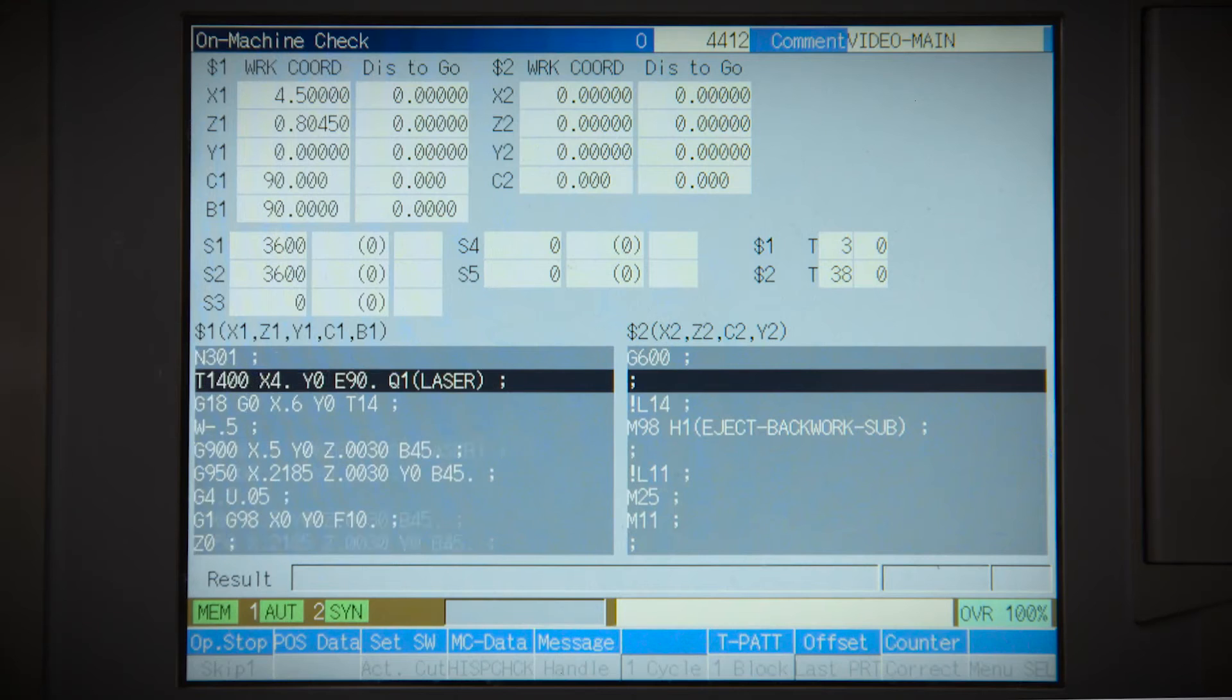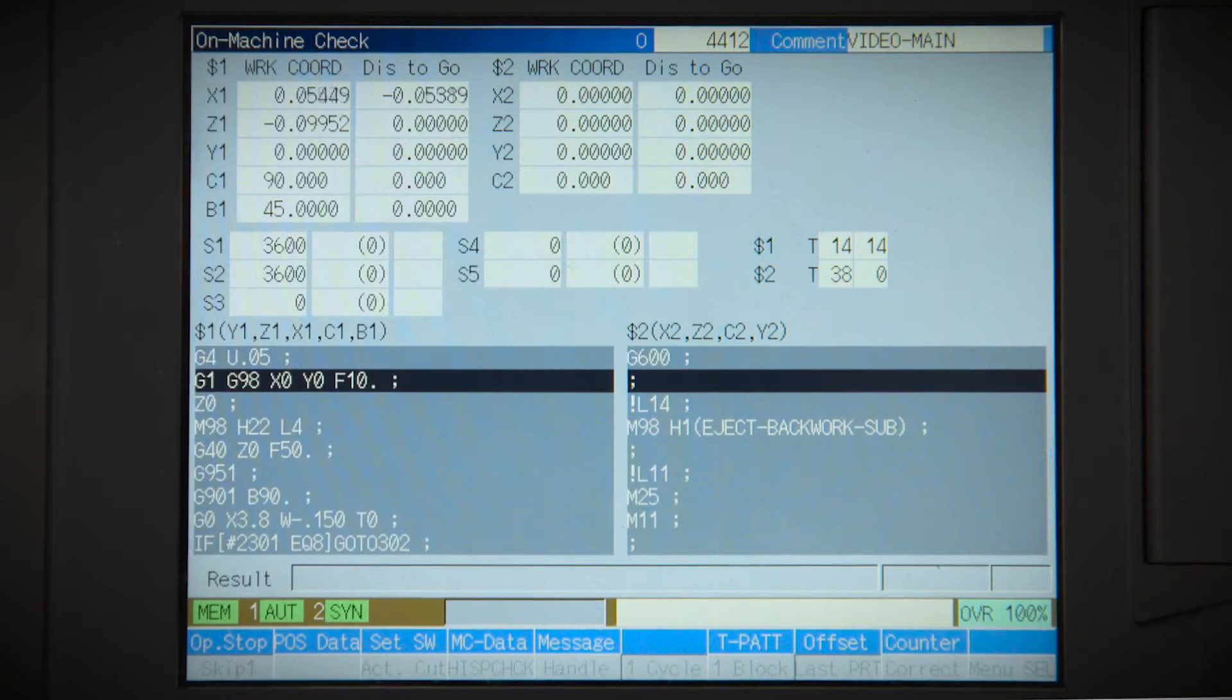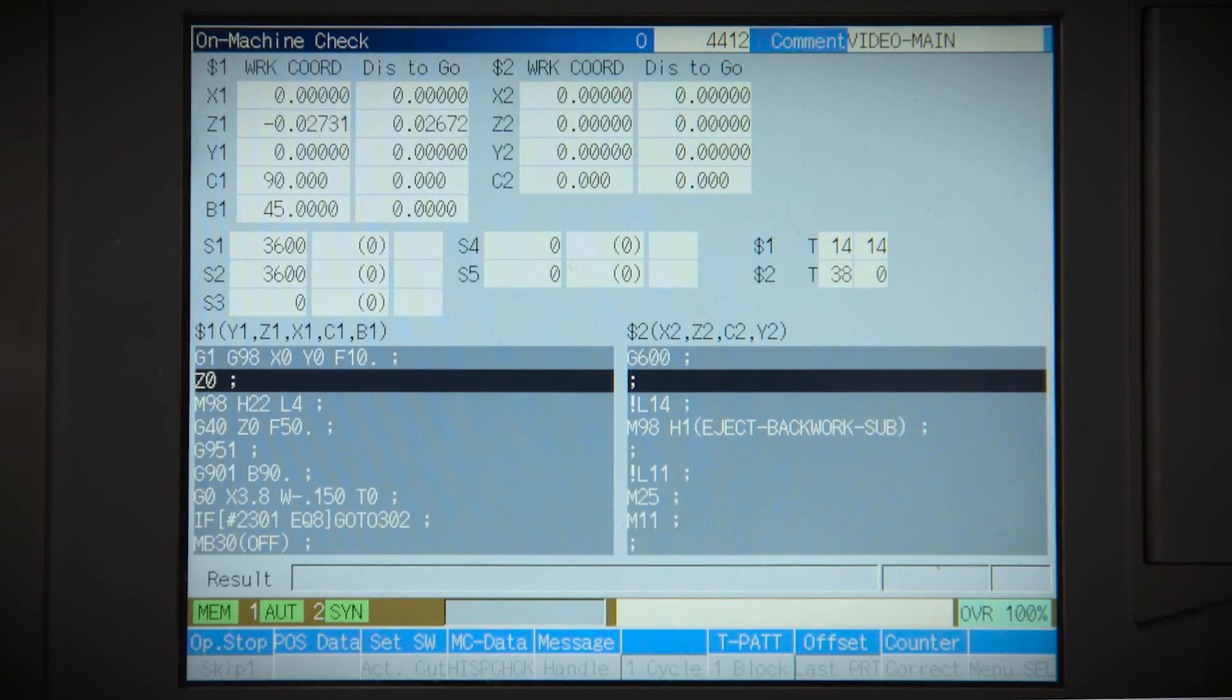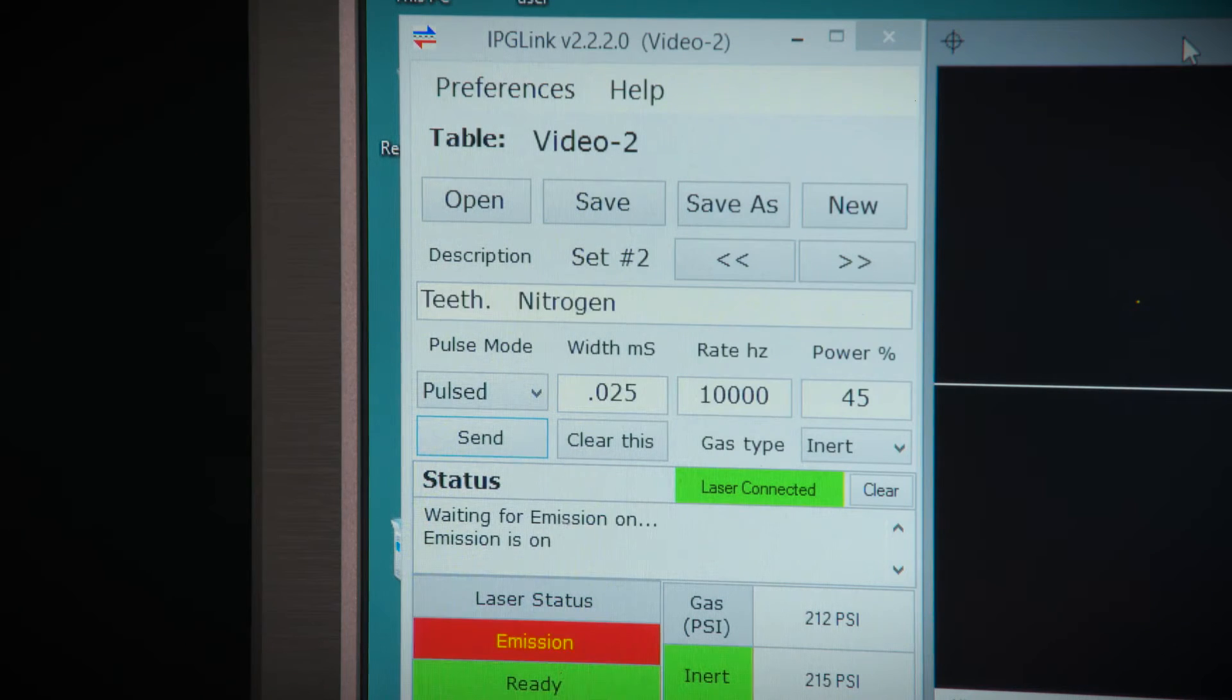The L2000 is completely interfaced to the Syncom control. Cutting path and offsets are fully controlled and edited in the machine control. Laser power and gas type can be selected from the part program.